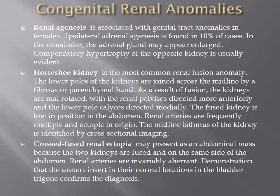Congenital renal anomalies include renal agenesis, usually associated with genital tract abnormality, mostly in females, with ipsilateral adrenal agenesis in 10% and compensatory hypertrophy of the contralateral kidney. Horseshoe kidney is the most common fusion anomaly; the lower poles are joined across the midline by fibrous or parenchymal tissue and are lower in position due to failure to ascend caused by the inferior mesenteric vessel. The renal arteries are frequently multiple and ectopic in origin. Cross-fused renal ectopia may present as an abdominal mass of two kidneys.